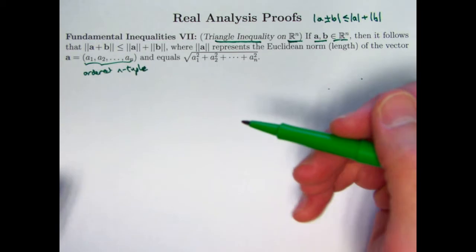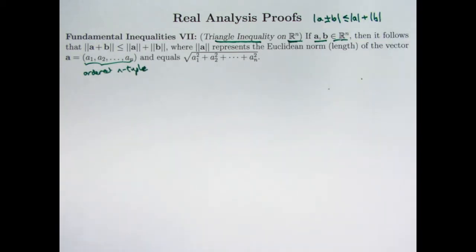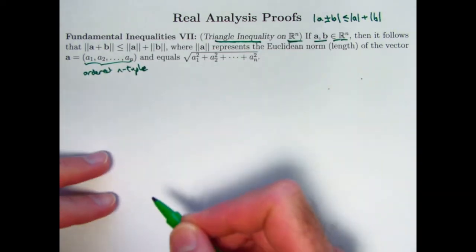You could call the numbers themselves either coordinates or components. Mathematicians typically call them coordinates, and physicists typically call them components, but it's up to you. I did talk a little bit about that terminology in the last video about the Cauchy-Schwartz inequality, which is going to be the main non-trivial fact that I'm going to use to prove the triangle inequality in higher dimensions here.